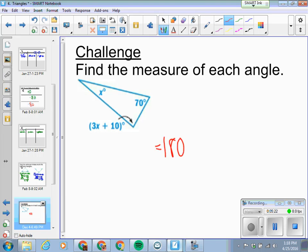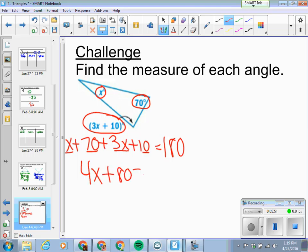Alright, a little more advanced here. We have some variables involved, a little more algebraic. Find the measure of each angle. So again, no matter what, we know that all triangles must equal 180 degrees when we add up all the angles. So we have X, this first one, then we have 70, I'm going in any order I want here, and then we have 3X plus 10. Add up those three angles, whatever they are, we'll get 180 total.